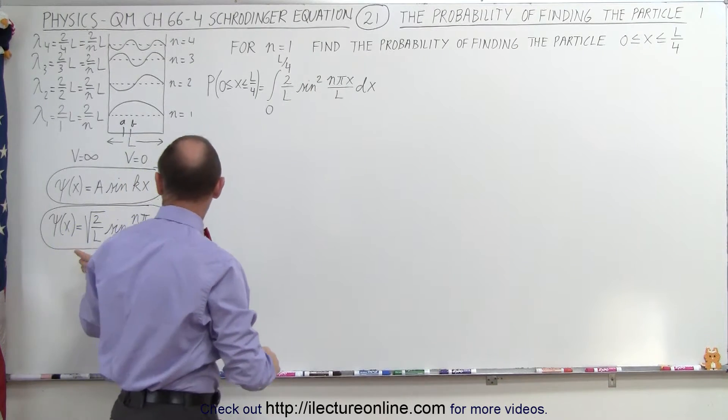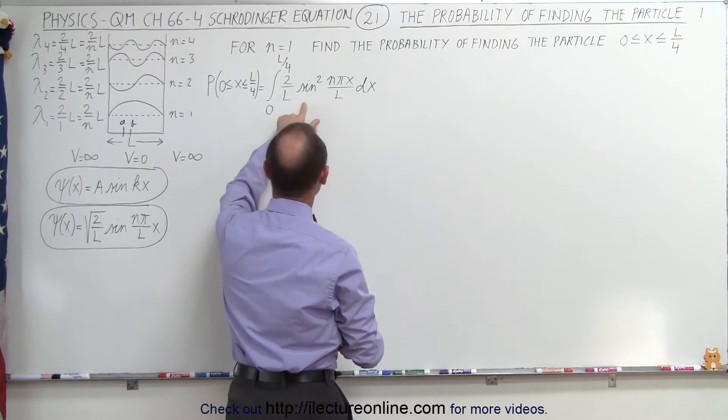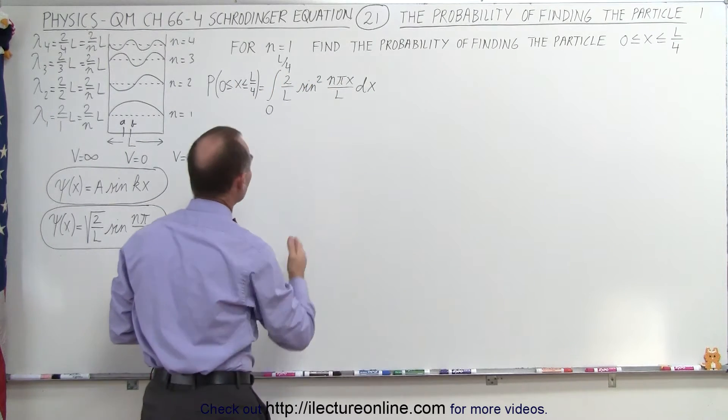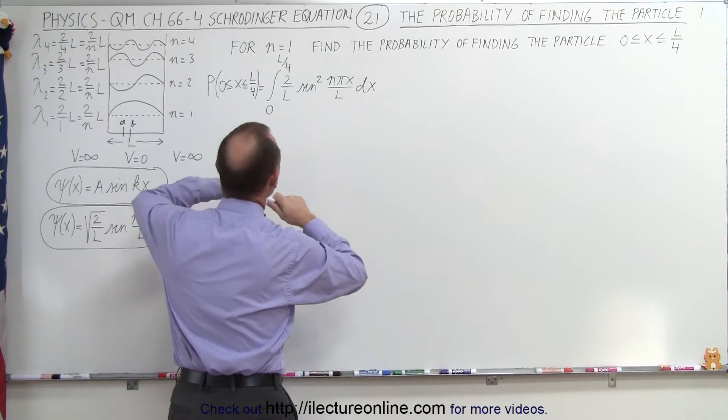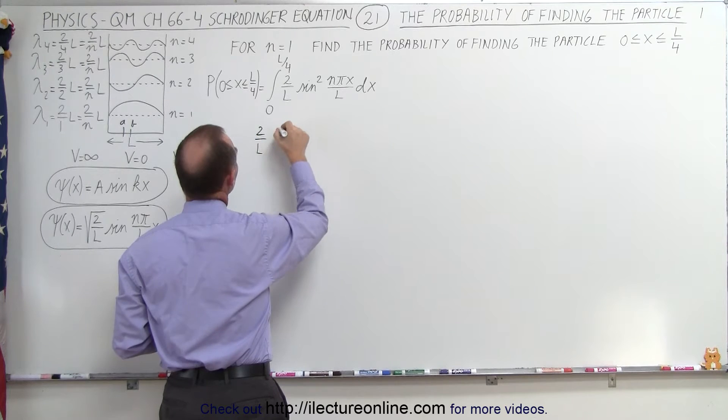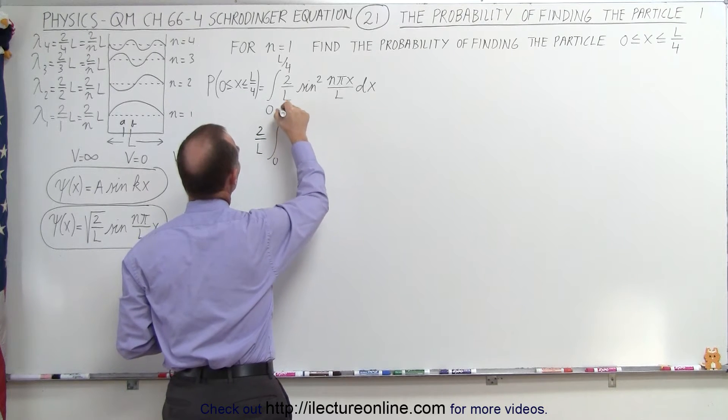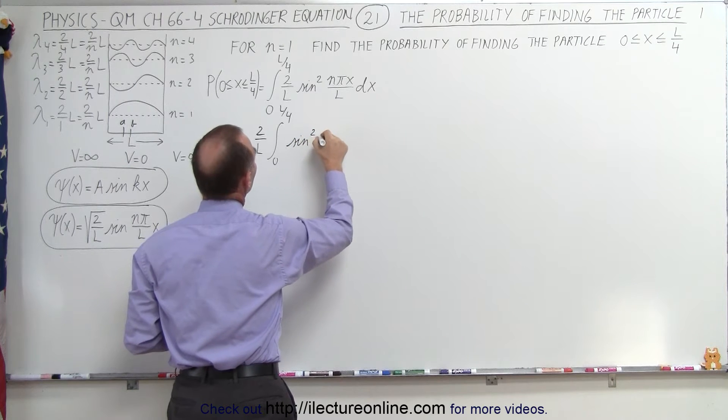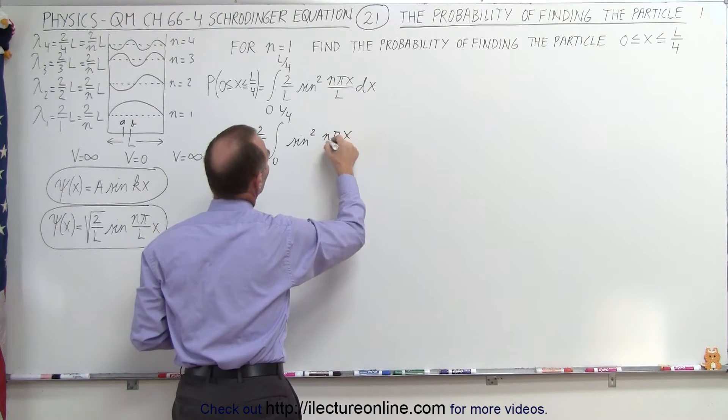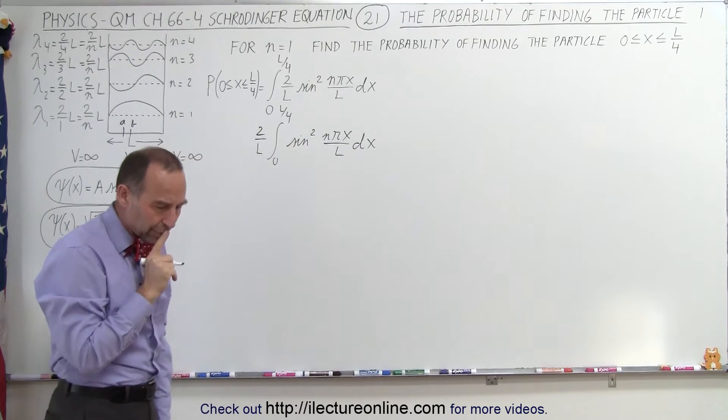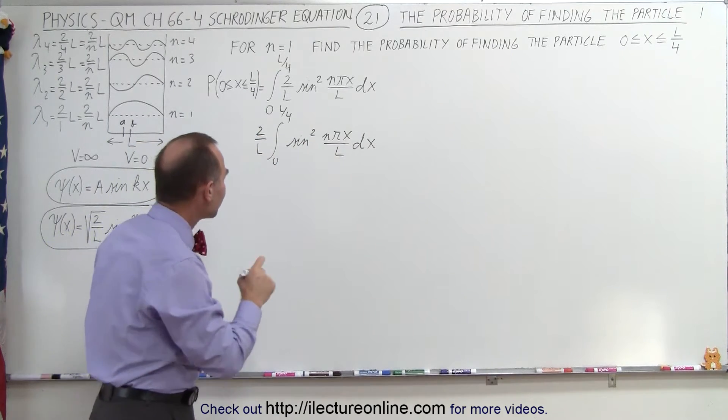So when we square this wave function, we get this right here, multiply it times dx, and then we integrate from 0 to L over 4. We can take the constant outside the integral sign, so that gives us 2 over L times the integral of 0 to L over 4 times the sine squared of n pi x over L dx. Now to integrate the sine squared, we can use the trigonometric identity as follows.